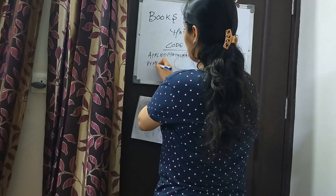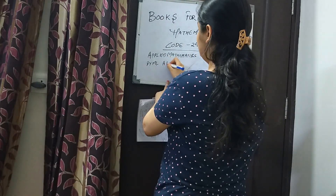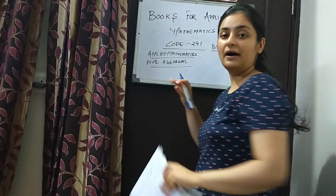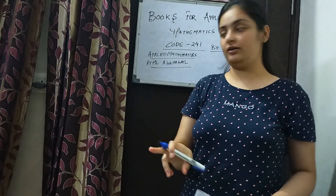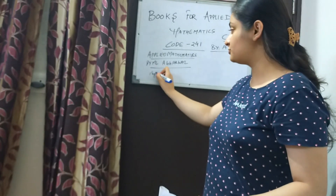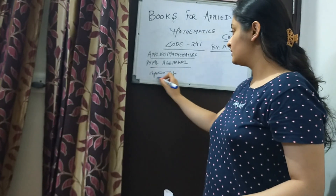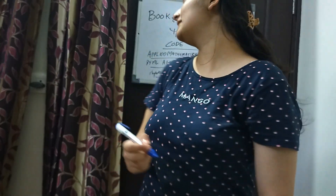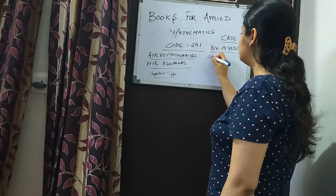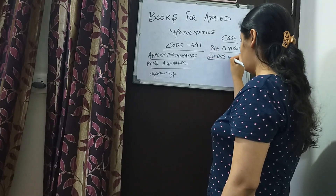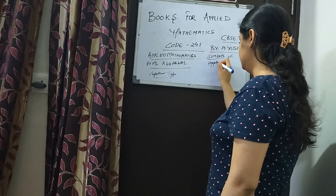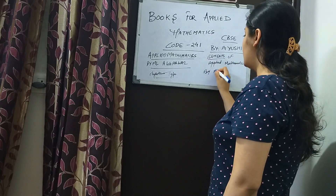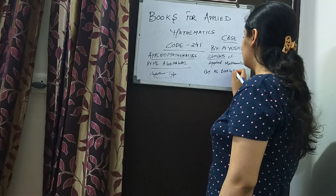The first book is by ML Agarwal — this book is the objective type. The second book I'll tell you about is 'Elements of Applied Mathematics', also by ML Agarwal.